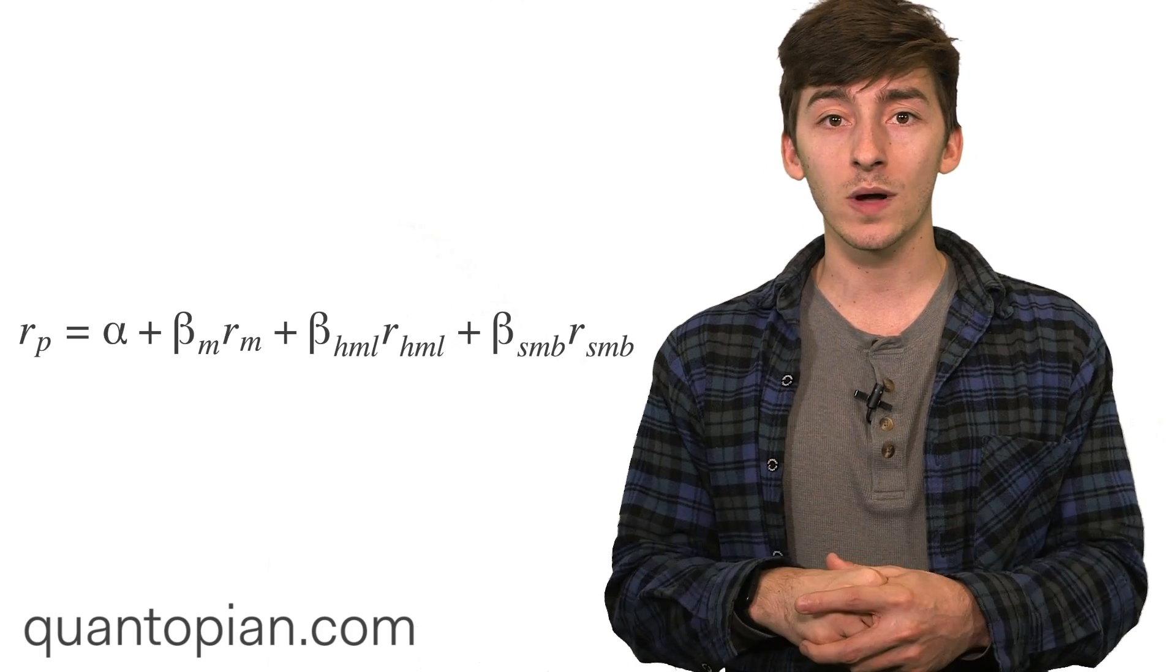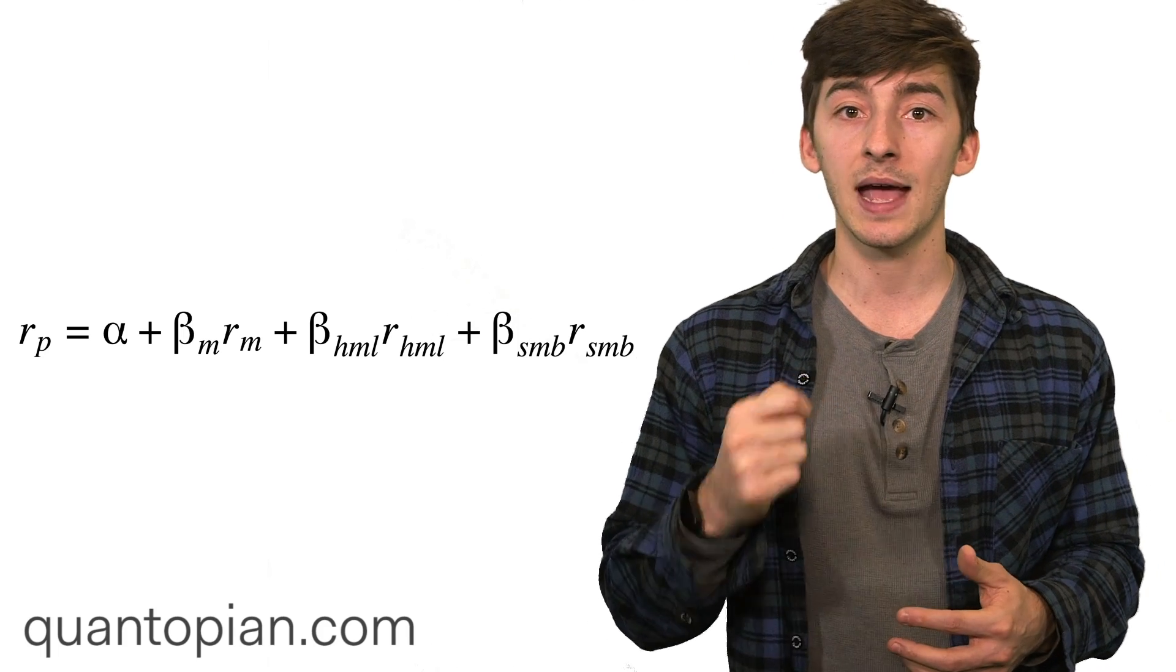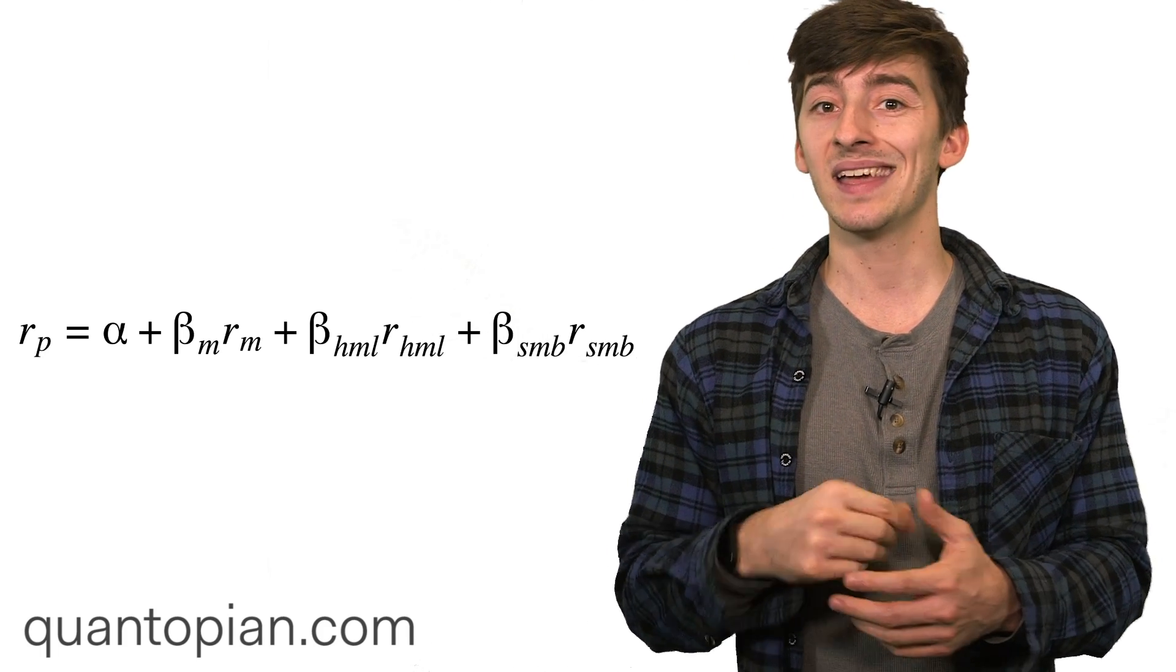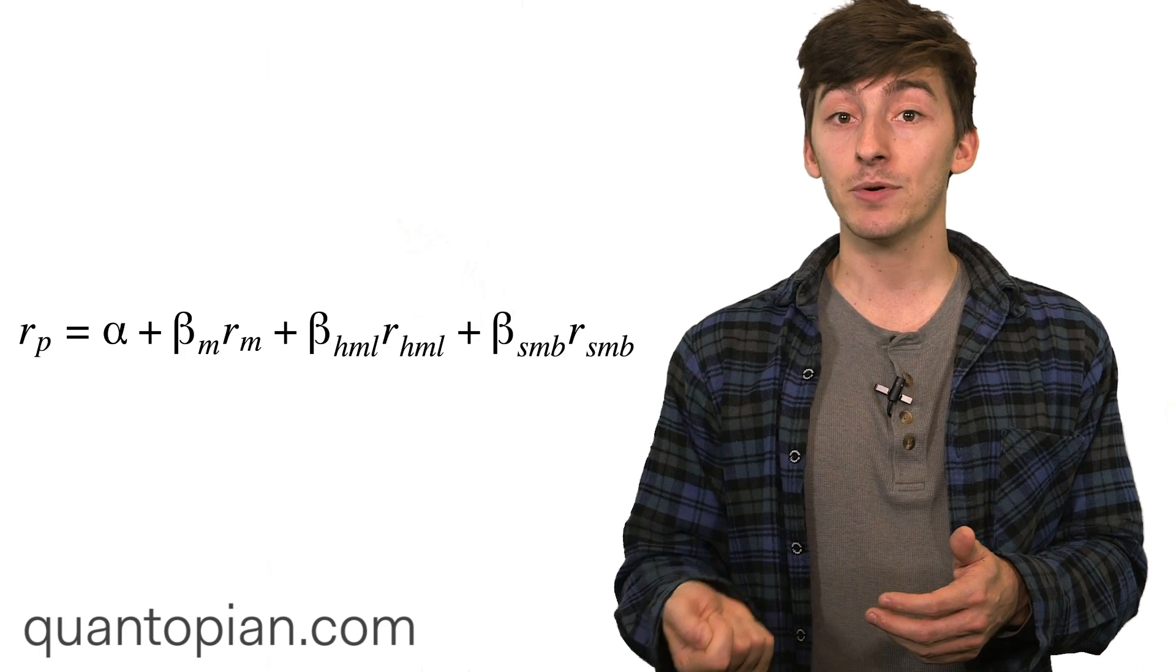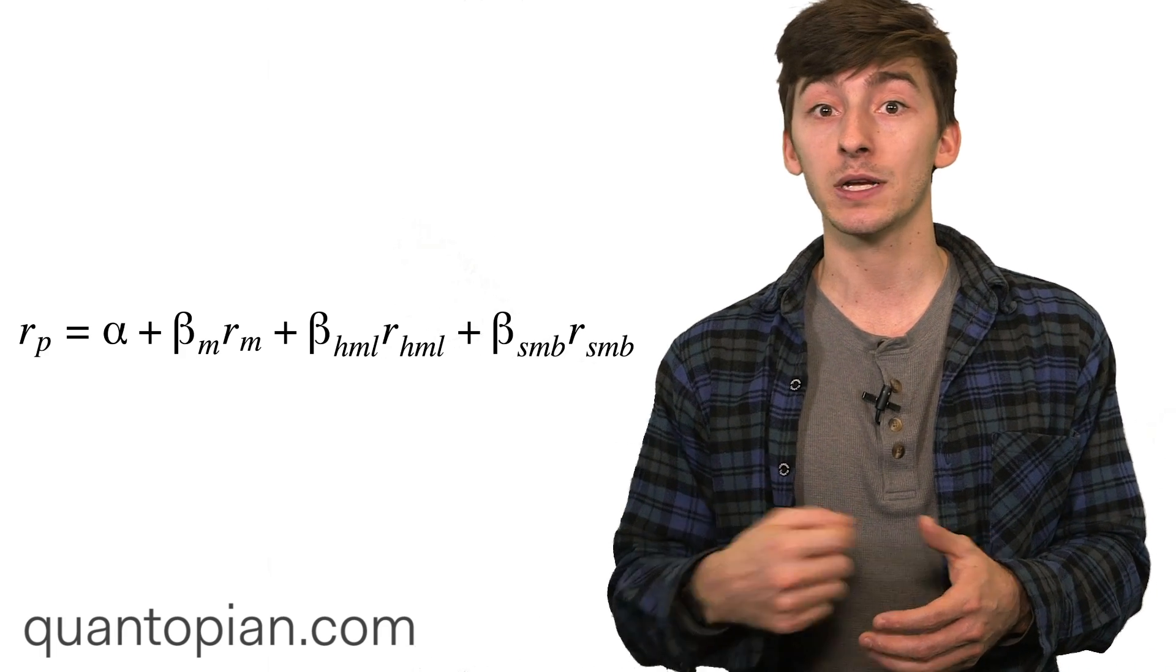One of the most notable ones is the Fama French factors, where we add in SMB (small minus big) and HML (high minus low), which are small market cap minus big market cap and high book to price ratio minus low book to price ratio.